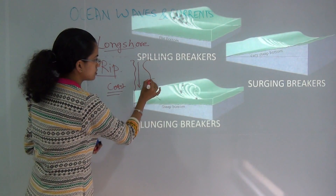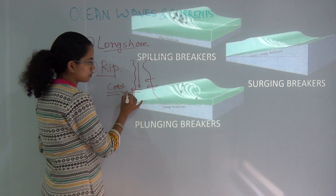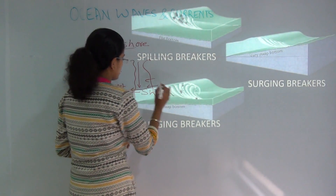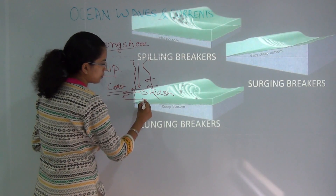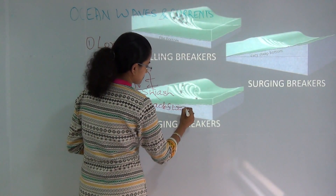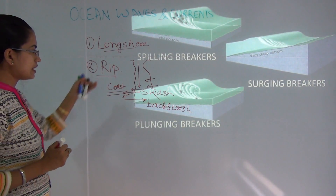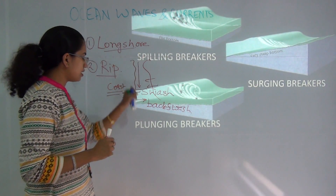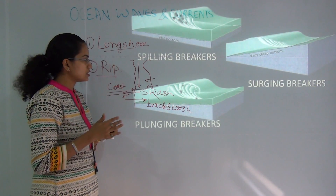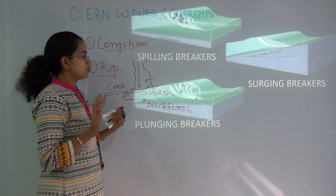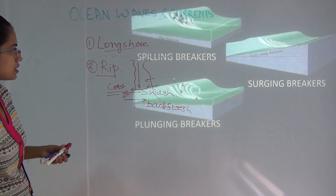Waves coming in from the sea bring particles towards the coast — this is known as swash. Then when the waves recede, the particle goes out — this is known as backswash. This would be the path of the longshore current. When a current flows parallel to the coast, it mainly aims to straighten the coastline, bringing sands and sediments deposited as longshore drift.